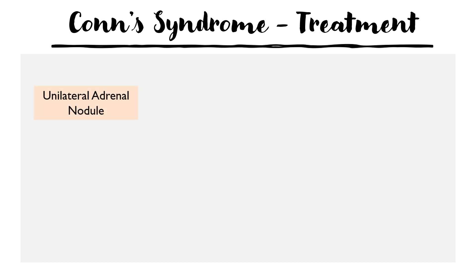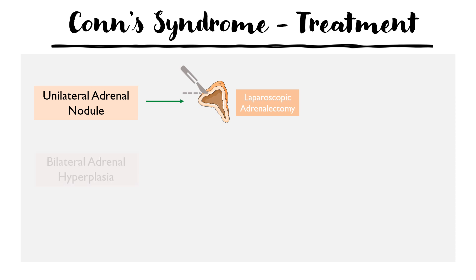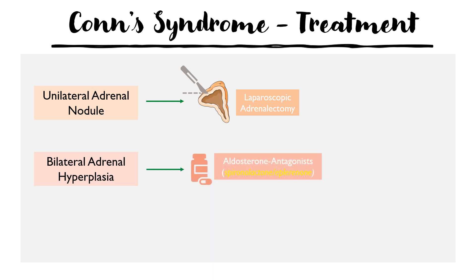Treatment depends on the underlying condition. For a unilateral adrenal adenoma, the definitive management is laparoscopic removal of the diseased region, which helps resolve the symptoms. For bilateral adrenal hyperplasia, you cannot remove both adrenal glands, so conservative management is used, focusing on aldosterone antagonists such as spironolactone or eplerenone, combined with a low-sodium diet to reduce symptoms.